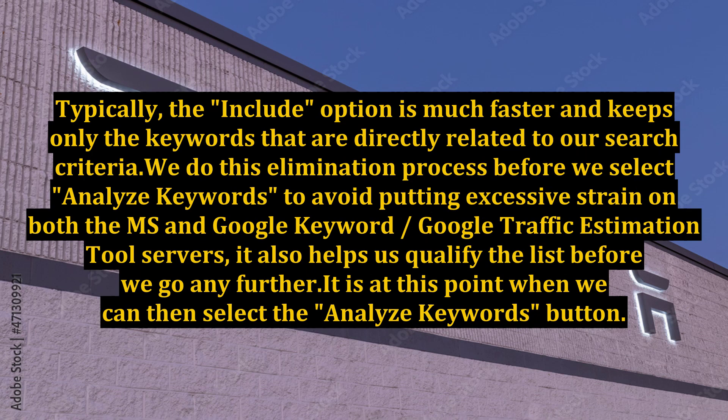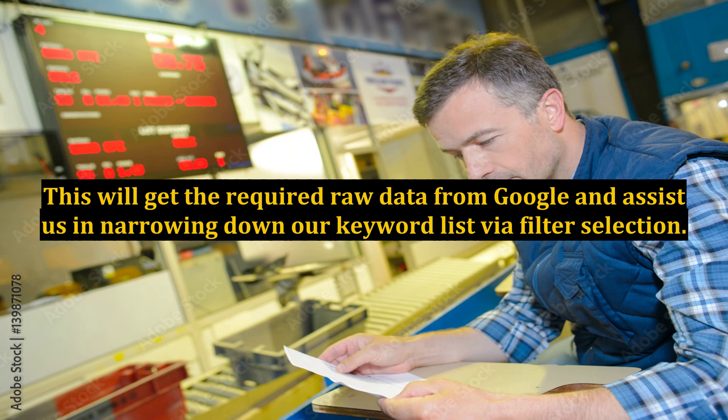Typically, the include option is much faster and keeps only the keywords that are directly related to our search criteria. We do this elimination process before we select 'analyze keywords' to avoid putting excessive strain on both the Market Samurai and Google keyword traffic estimation tool servers. It also helps us qualify the list before we go any further.